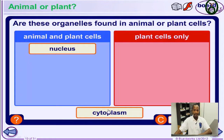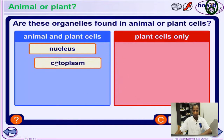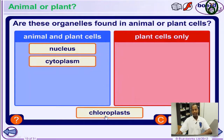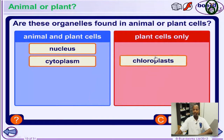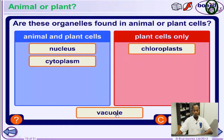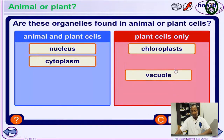The chloroplasts — the site for photosynthesis, containing the green pigment which helps to trap solar energy — is only found in plant cells. The vacuole is a fluid-like substance containing water and nutrients for the plant to carry out its functions, so it's found in plant cells.